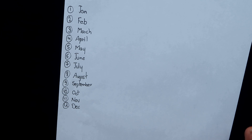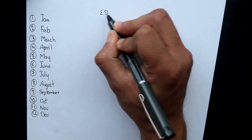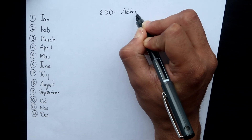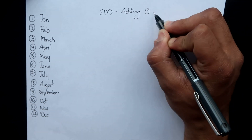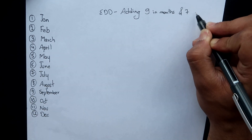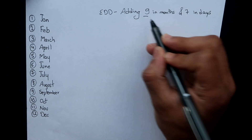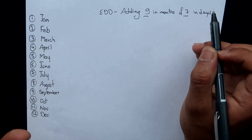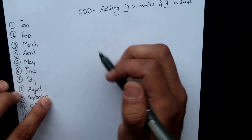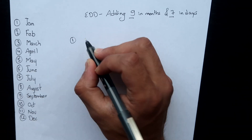So the best way to calculate the estimated date of delivery is by adding nine months and seven days. We add nine months and seven days, and we are also going to see all the variations of this. Let's get started with Example 1.